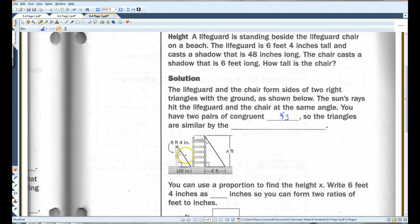Once again, the right angle and this angle. So the triangles are similar by angle-angle similarity.